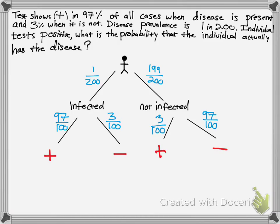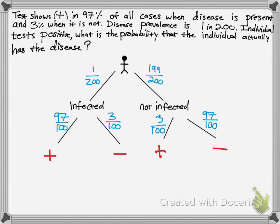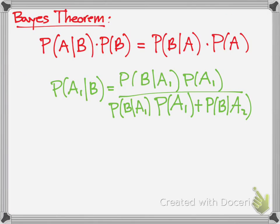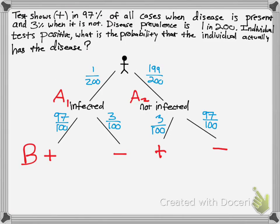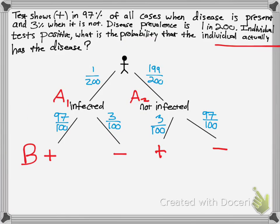Let's talk about Bayes' theorem. I'll label the infected branch A1, the not-infected branch A2, and the test result B. The question is: what's the probability that the individual actually has the disease given they test positive? We need to consider all paths where a positive test result occurs — including both true positives (infected and test positive) and false positives (not infected but test positive). That zone — being infected and testing positive — is what we're trying to calculate.